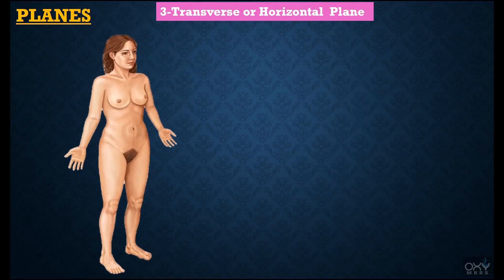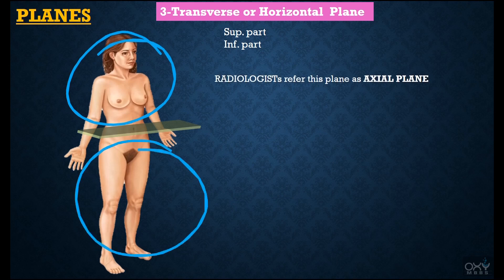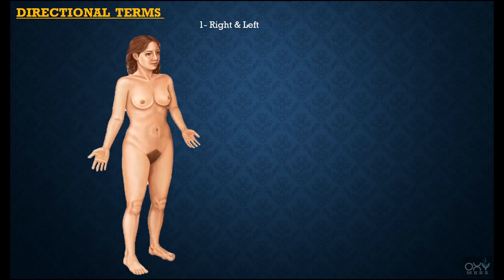Coming to our last plane: the transverse or horizontal plane. This is an imaginary plane which divides the body into a superior part and an inferior part. Radiologists refer to this plane as the axial plane.